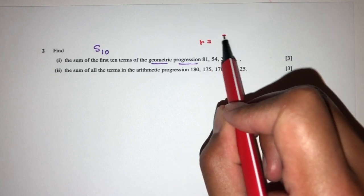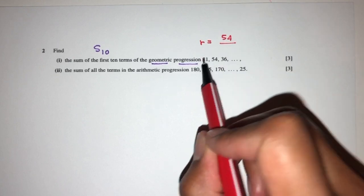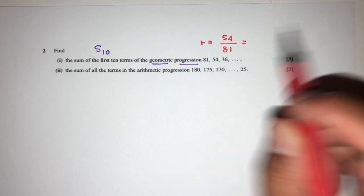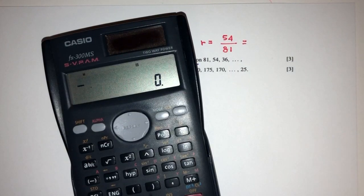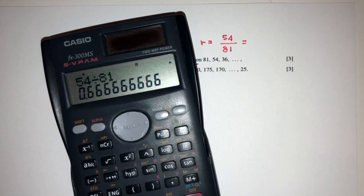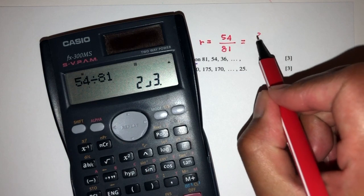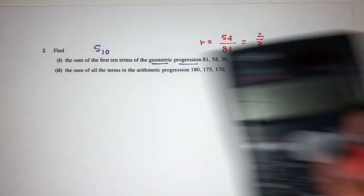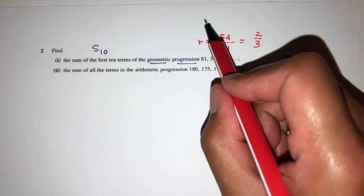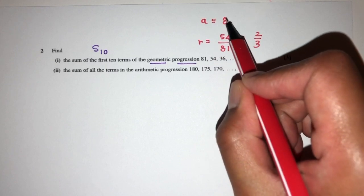R will be the value of 54 divided by the first term. 54 divided by 81, that should be 2 over 3. So this is the value of R. Now, we also know the value of A, which is the first term, is 81.